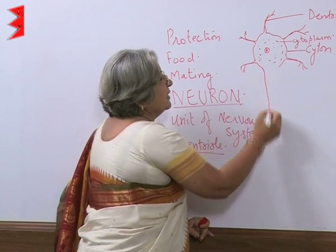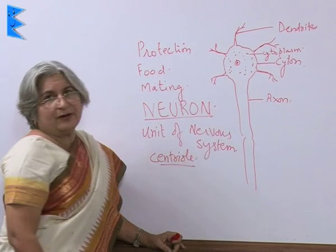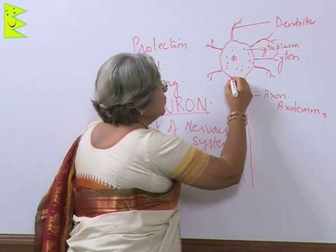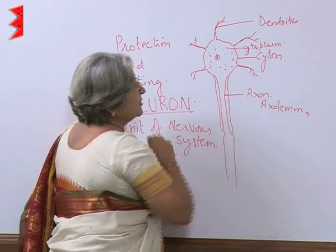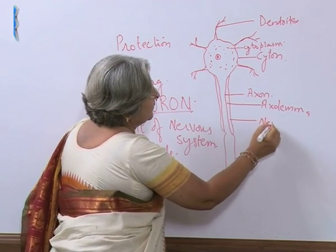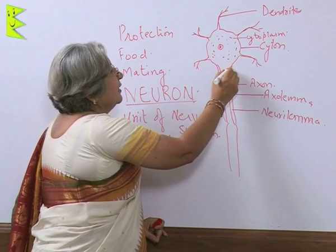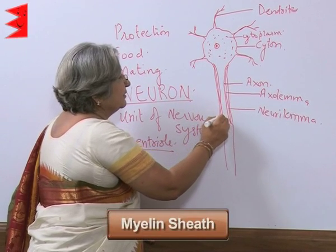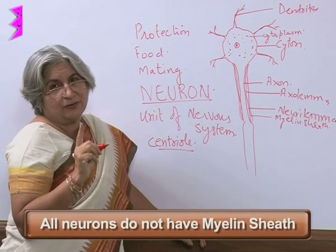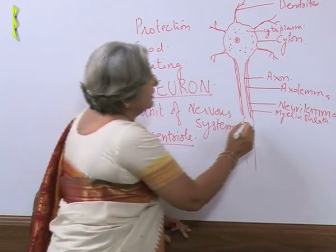The cytone is continued as a cytoplasmic process called axon. The cell membrane of the axon is called axolema. This whole structure is covered by a sheath called neurilema. Some neurons have another covering in between which is called the myelin sheath, but all neurons do not have it. After a little interval, there is an area without myelin sheath which is called Ranvier's node.